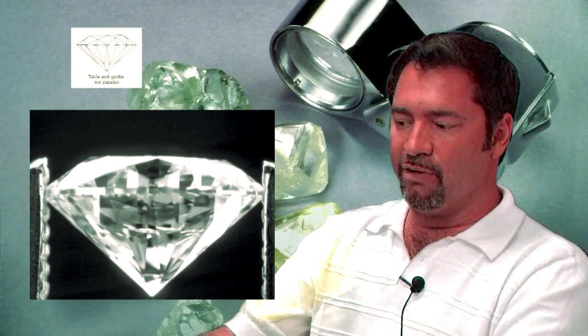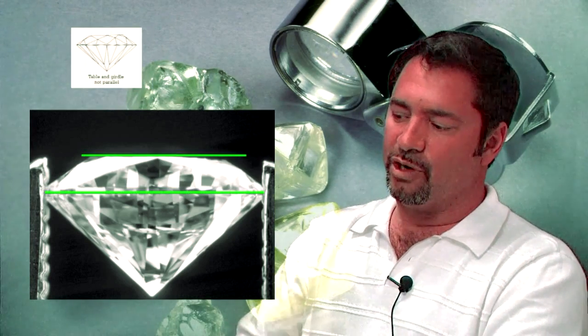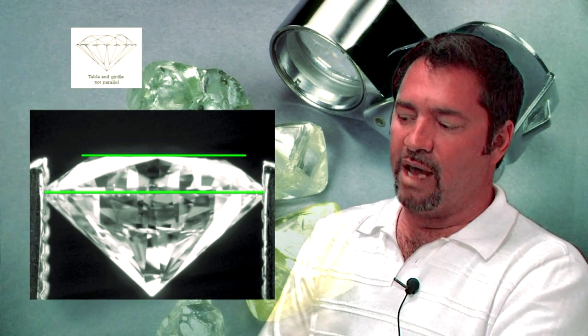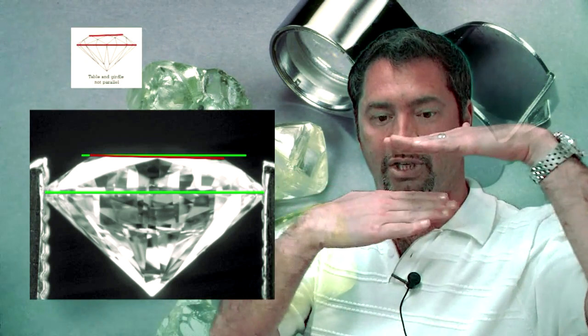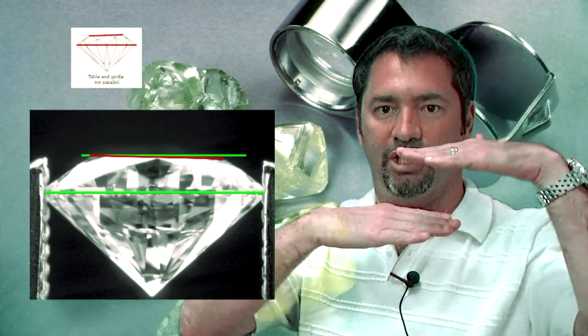This graphic shows another symmetry feature where the table is not parallel to the girdle. When cutting a diamond, the table and girdle should be parallel with each other.